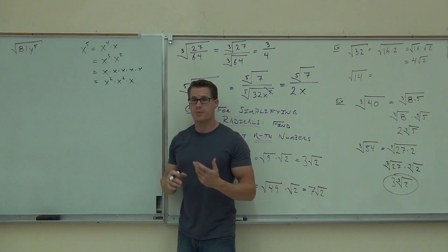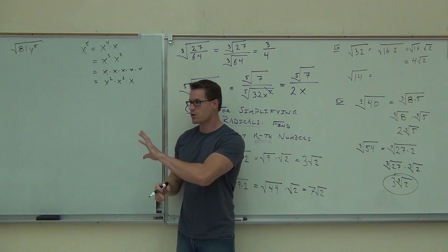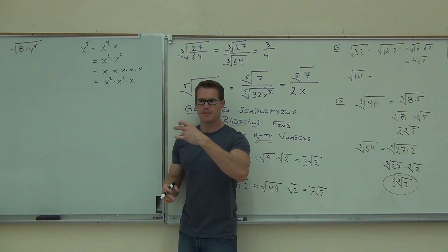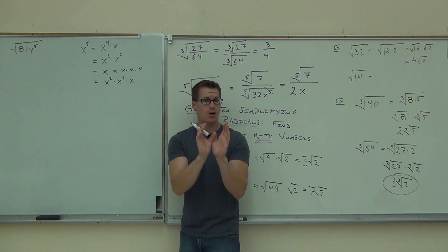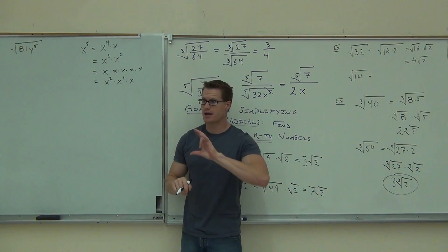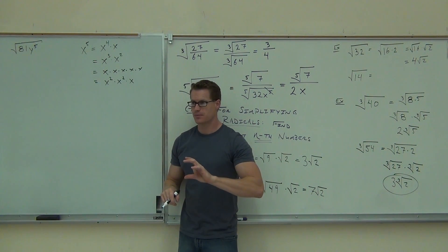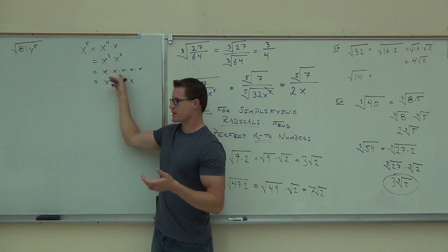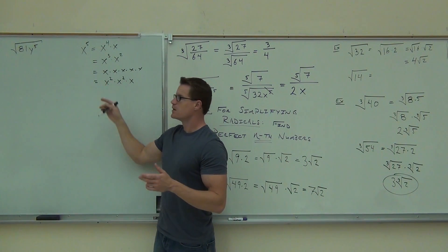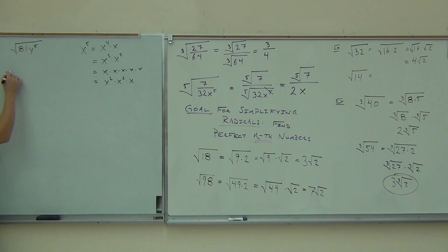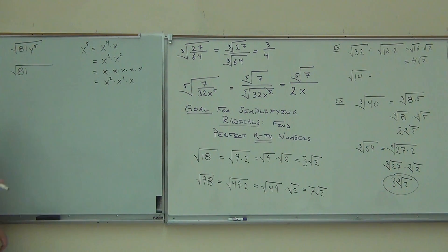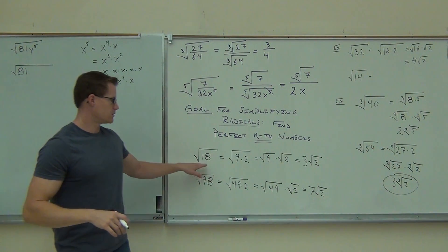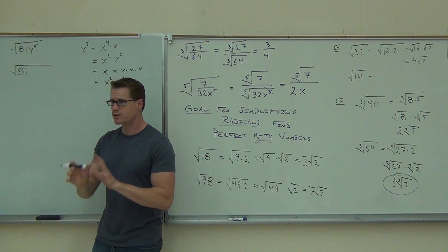Why I'm looking for power-twos is that whenever we have a power of two matching with a square root — whenever the power matches the root — I can take one of those x's outside of my radical. It simplifies. A square and a square root cancel each other. So since I have a square root, I'm looking for x to the power two. I'll keep the square root of 81 because that's already a perfect square; I don't need to split that number up like 18 or 98.